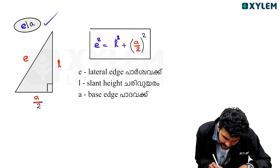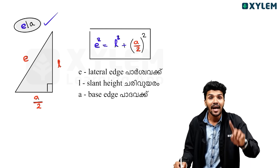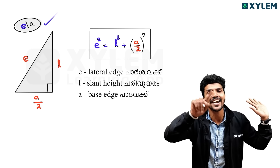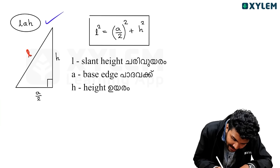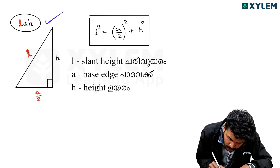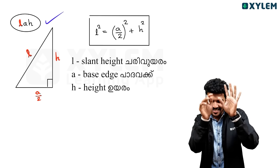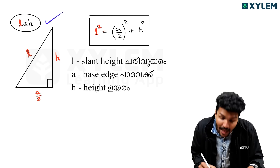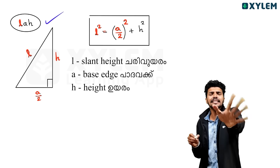E, L, and A by 2 form a right-angled triangle where E is the hypotenuse. You can see L squared is equal to (A by 2) whole squared plus H squared.